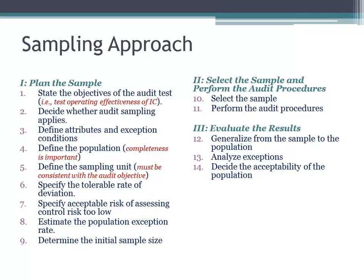If you're testing operating effectiveness of internal controls, then these are the kinds of attributes that exist for this particular control. And if those attributes are missing, then you have an exception. So clearly state the objective of your audit test. Decide whether audit sampling applies. Audit sampling applies when you're testing the effectiveness of operating controls, because you're going to look at a number of transactions and controls and see if those controls are being met, or to ensure that there are no breakdowns in internal controls.